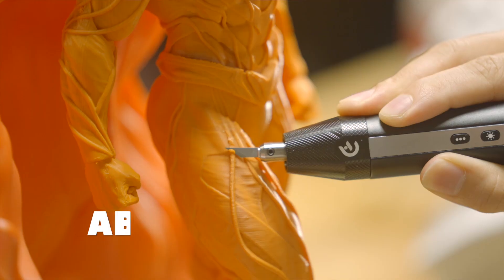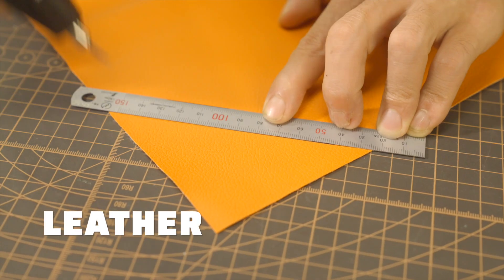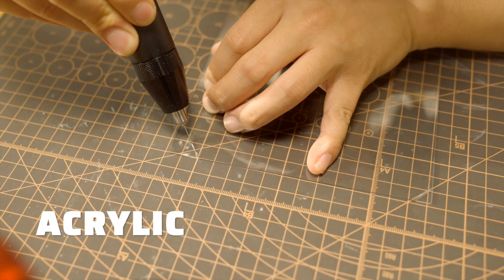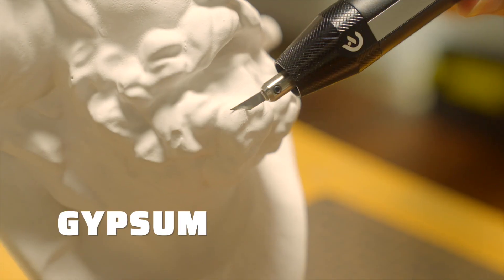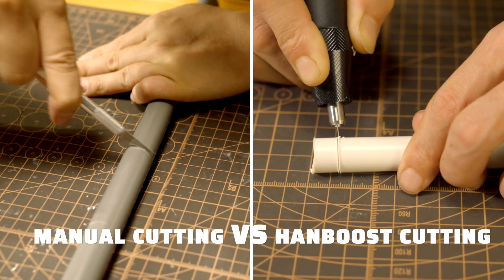From trimming PLA, ABS, plastic models, leather, PVC, paper cutting, wood slicing, acrylic, rubber, gypsum, or PCB, it consistently delivers the precision you need.